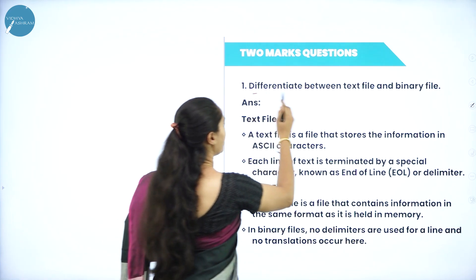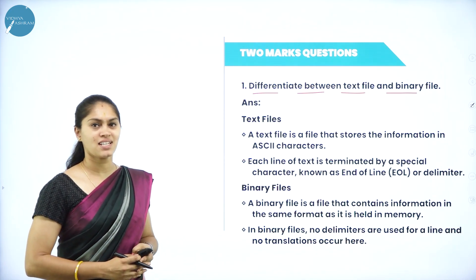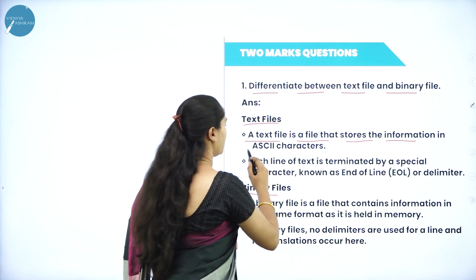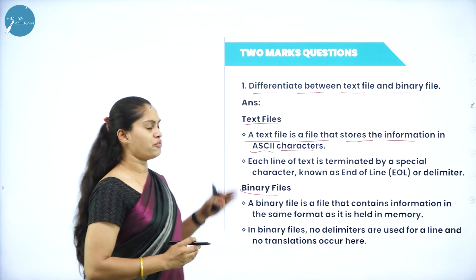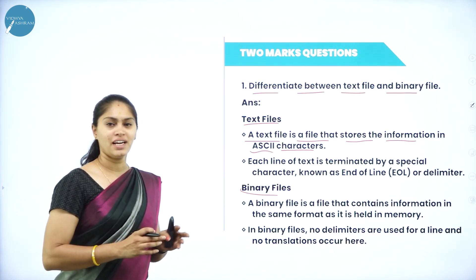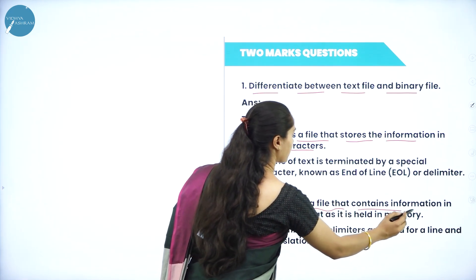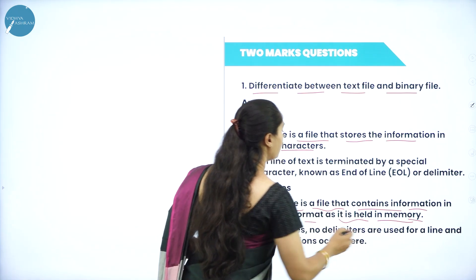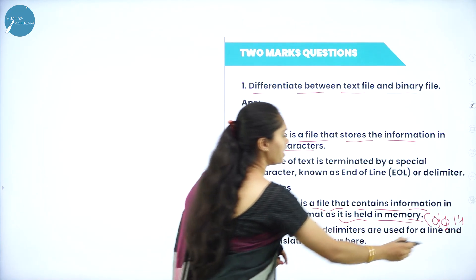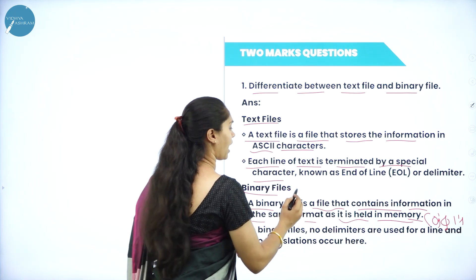The first question is: differentiate between text file and binary file. A text file stores information in ASCII characters — that is, American Standard Code for Information Interchange. A binary file contains information in the same format as it is held in memory, which is in the format of zeros and ones. Each line of a text file is terminated by a special character.